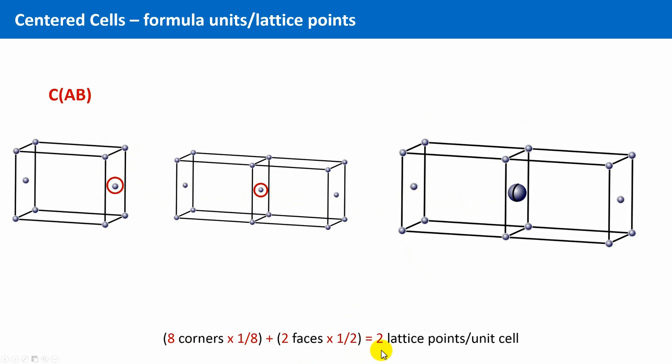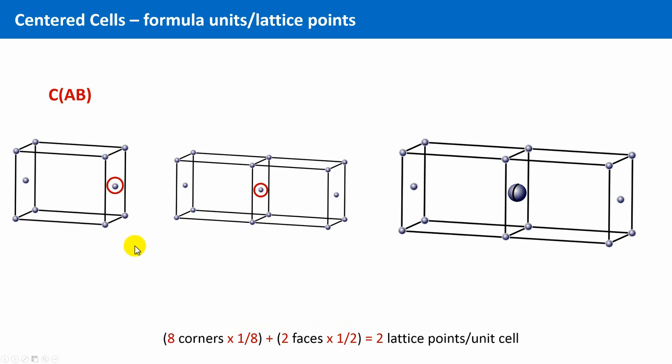In the case of the single-side face centering, we have eight lattice points at the corners of the unit cell, and we have two points at faces. Lattice points at faces belong to two unit cells simultaneously. This means the lattice points at the faces belong to one-half to each unit cell, and this gives two lattice points per unit cell in total.